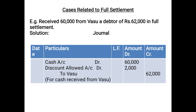Example: received Rs. 60,000 from Vasu, a debtor of Rs. 62,000, in full settlement. Rs. 2,000 less was received — this is discount allowed, not bad debts. Entry: Cash Account debited Rs. 60,000; Discount Allowed Account debited Rs. 2,000; to Vasu Rs. 62,000 (closing his account). Narration: for cash received from Vasu in full settlement.